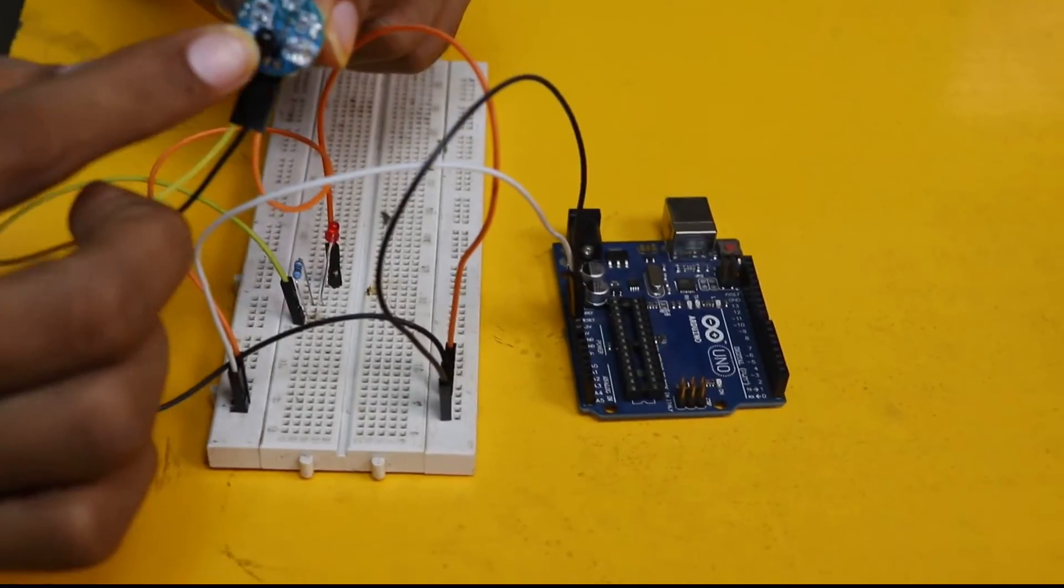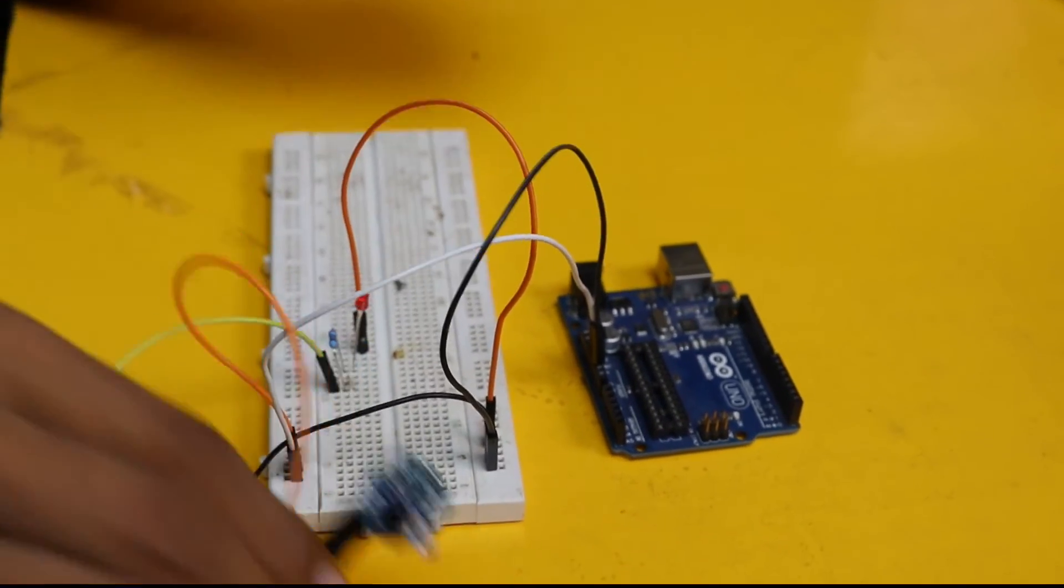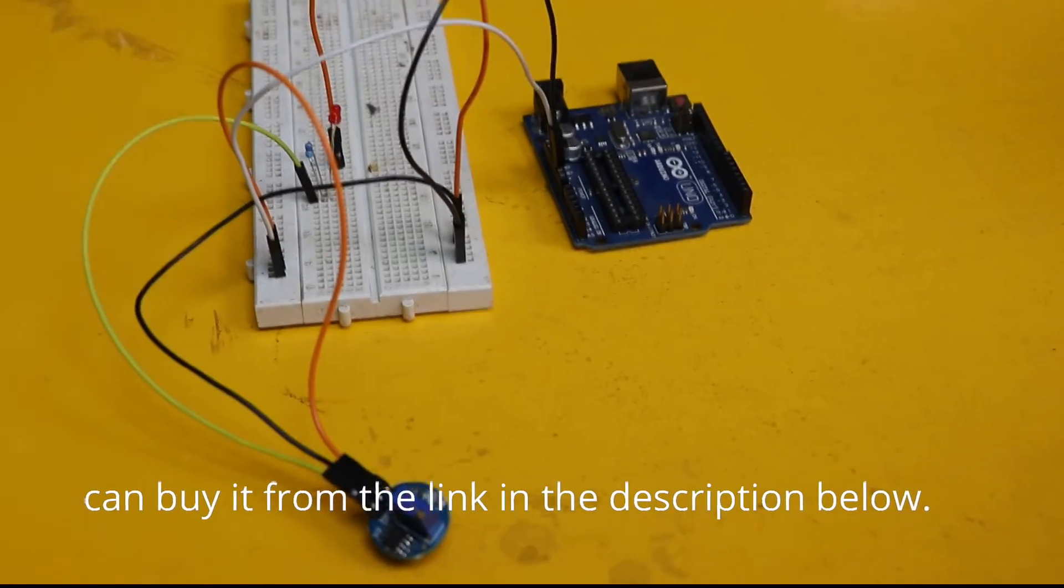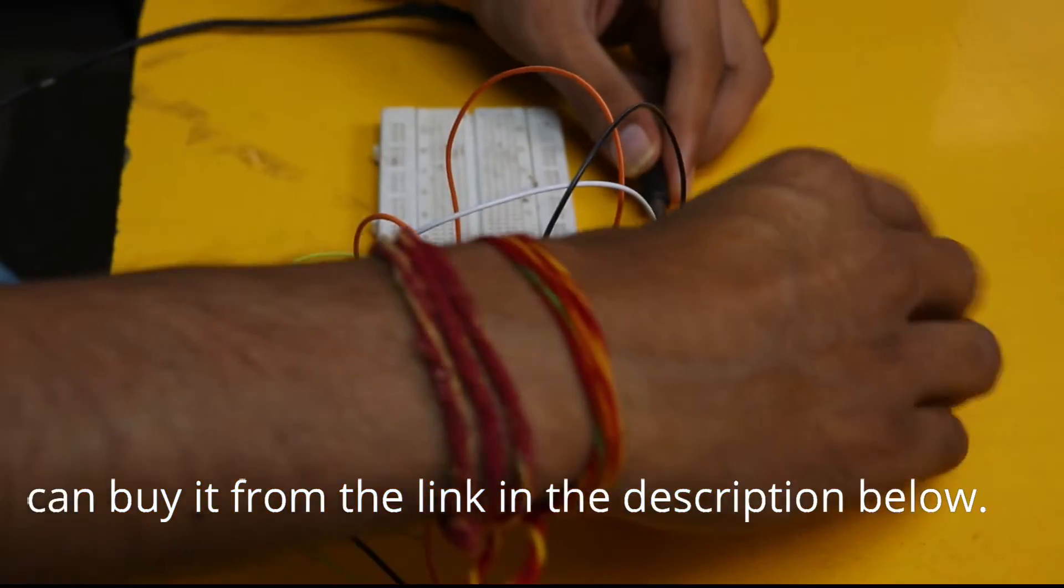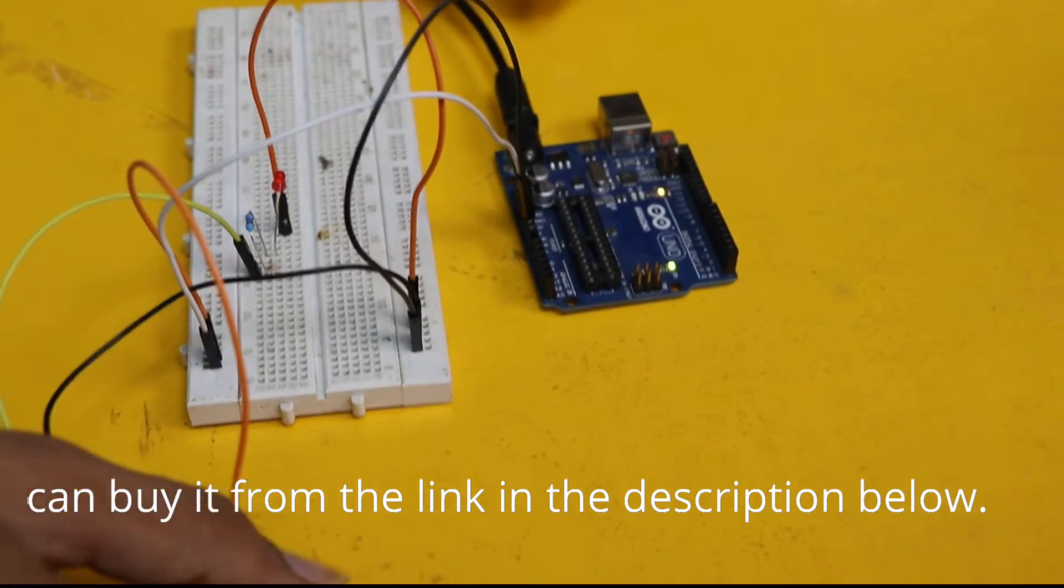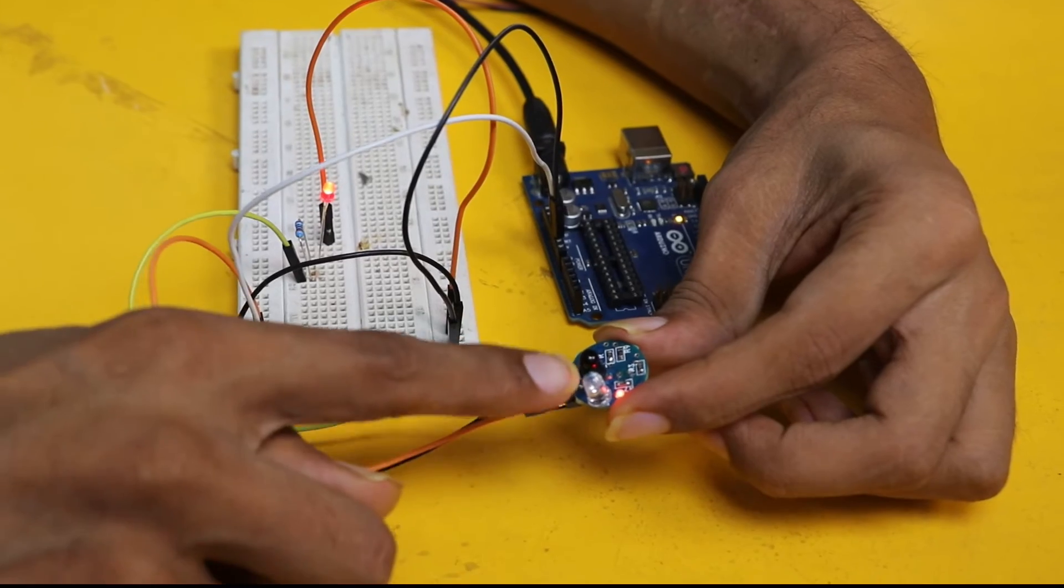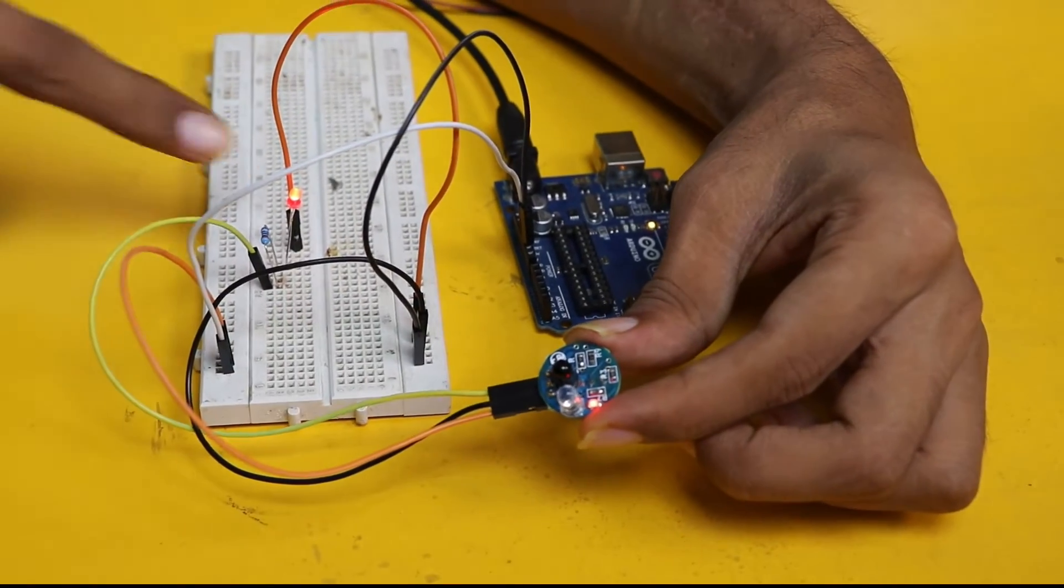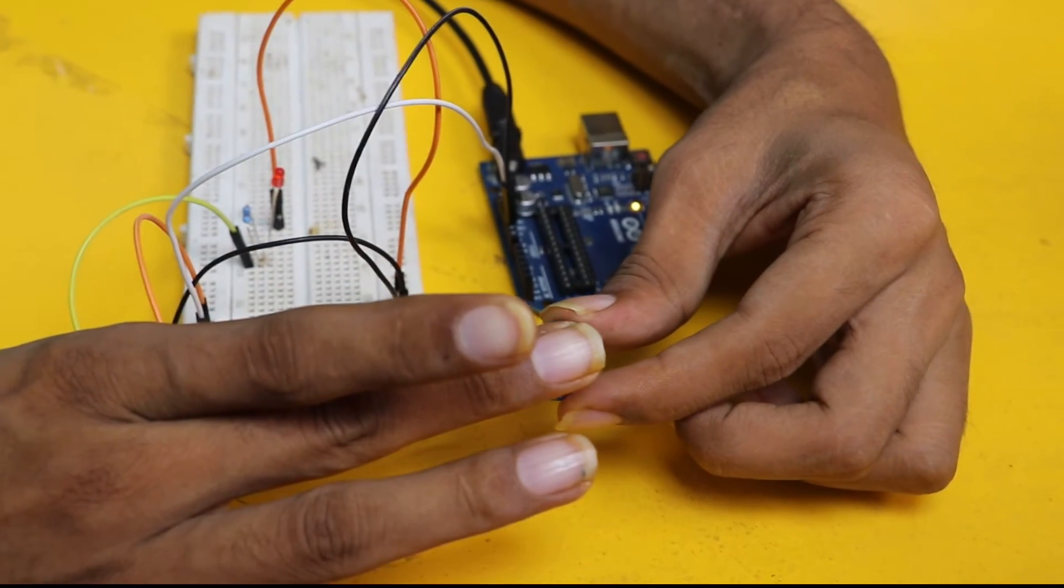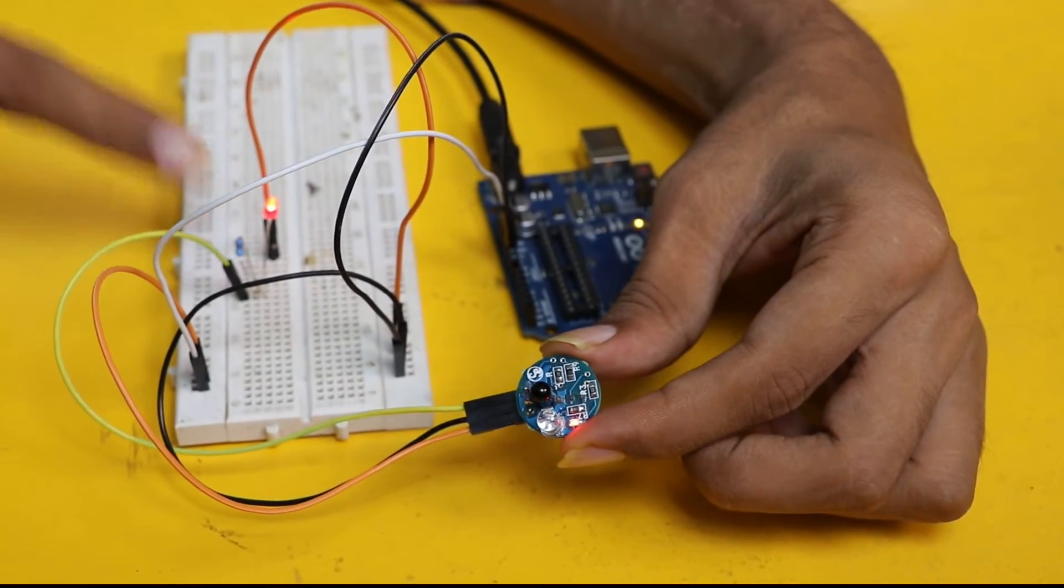Let me show you the transmitter and receiver pair. They are working on reflection principle. Now we are going to connect power supply to the Arduino board - this is a 12 volt adapter to the Vin of Arduino. Now both LEDs are on because there is no reflection. Now there will be reflection because my hand is in front of the IR sensor, so both LEDs are off.